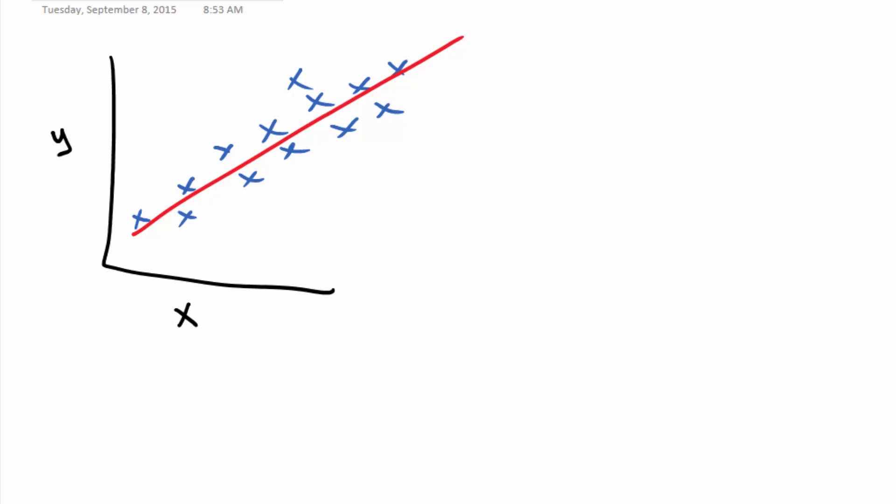And we're going to define best by taking these values like this, the residuals, and add them up squared, so the sum of the squared residuals and we're going to try and minimize them. So that line is going to have a lower sum of the squared residuals than say for example that line.